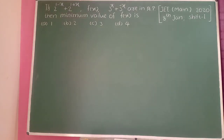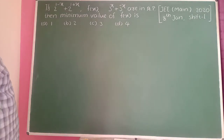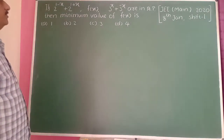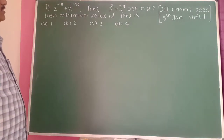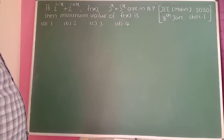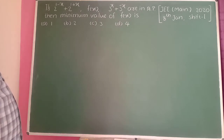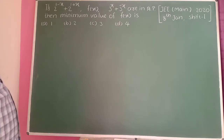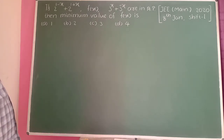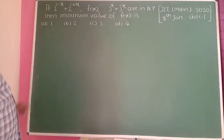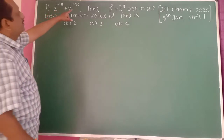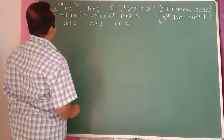Next problem: If 2 raised to 1 minus x, plus 2 raised to 1 plus x, f of x, and 3 raised to x plus 3 raised to 1 minus x are in AP, then find the minimum value of f of x.